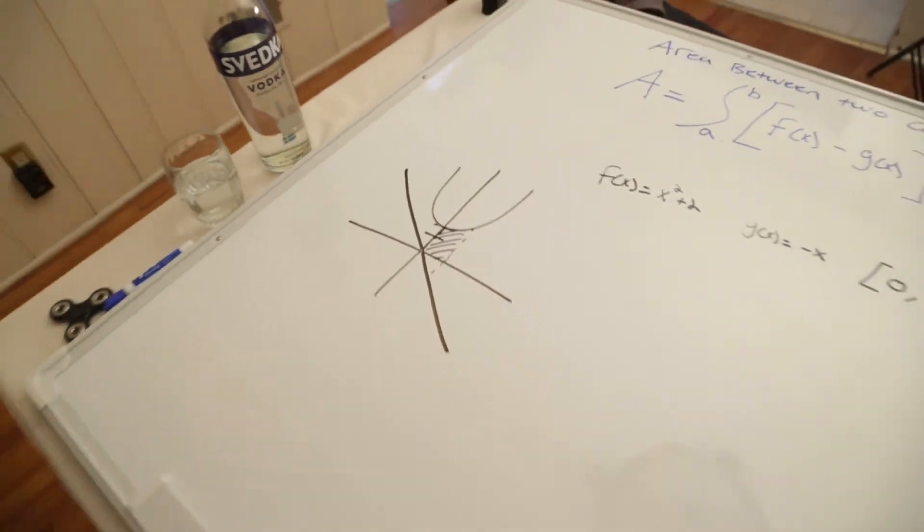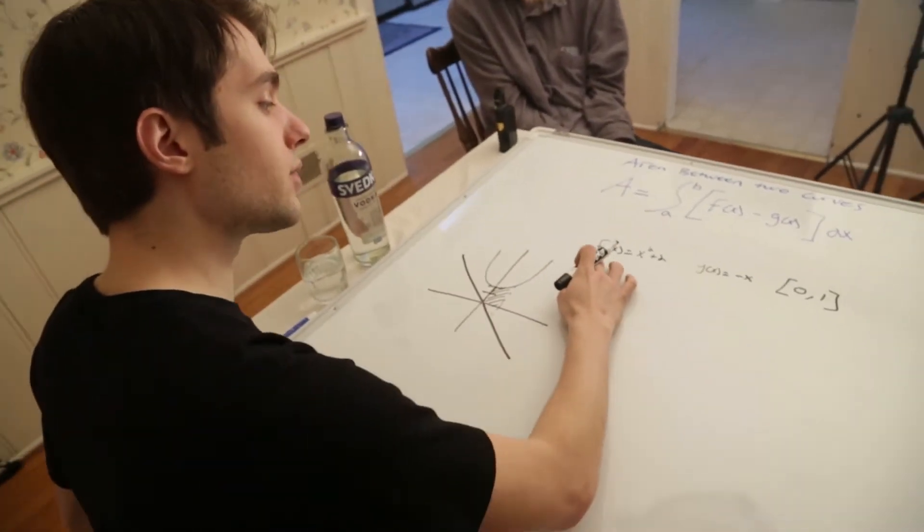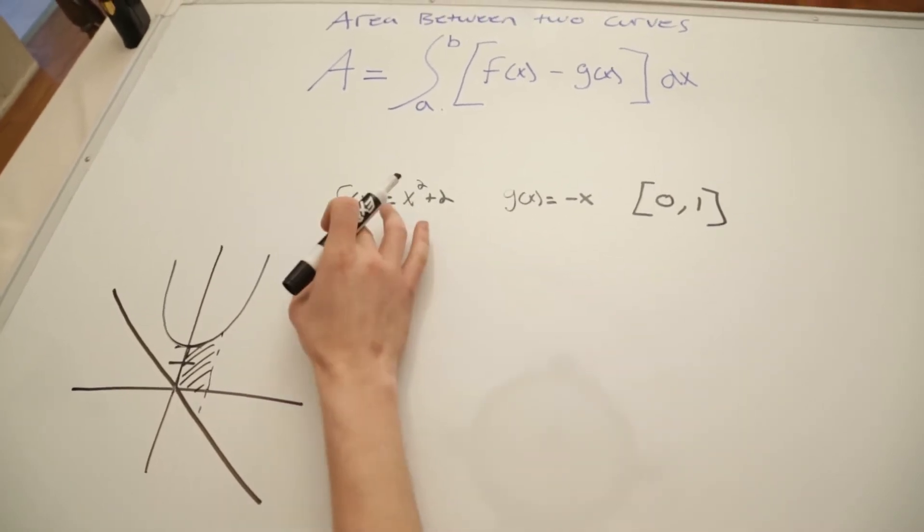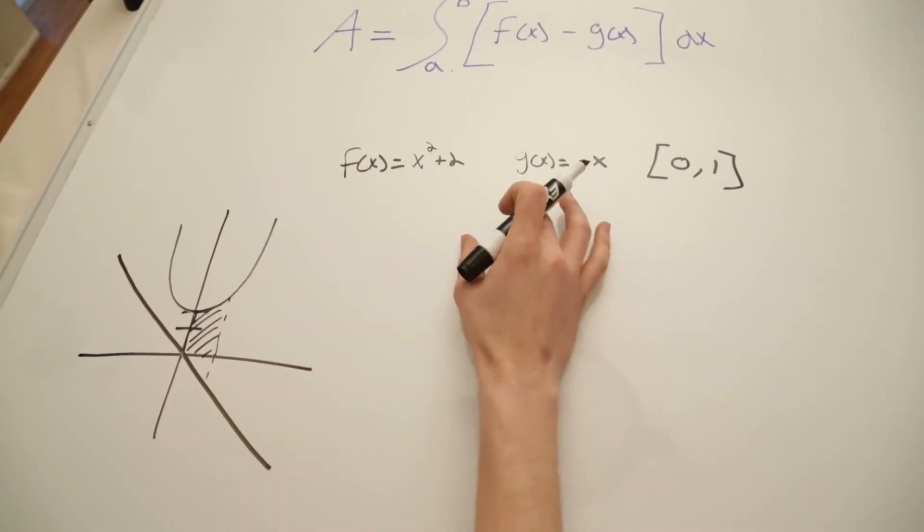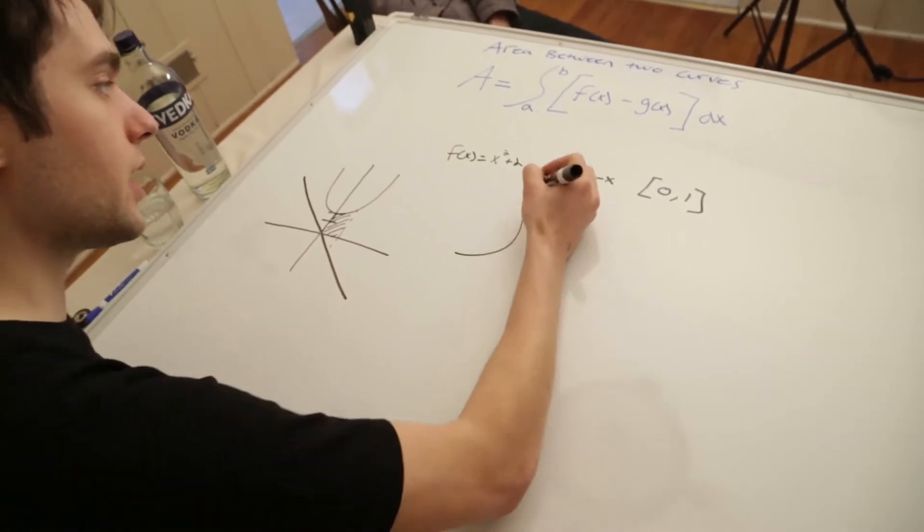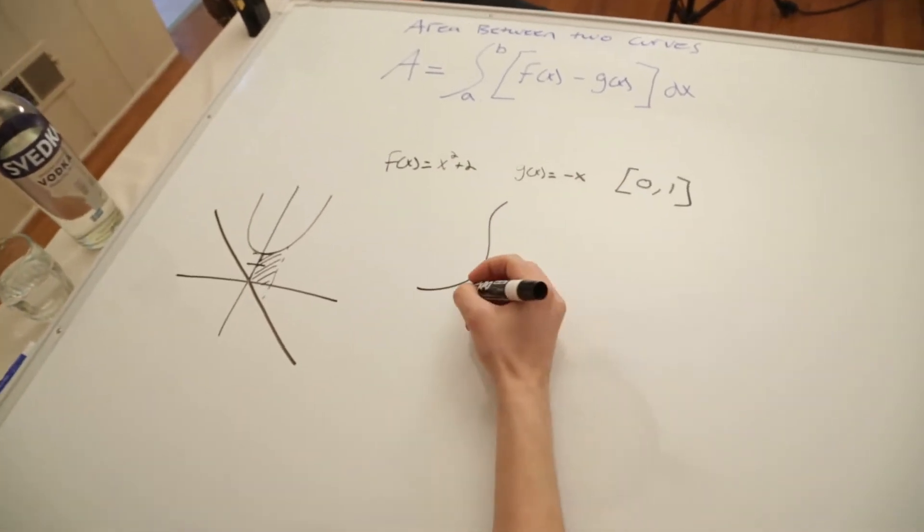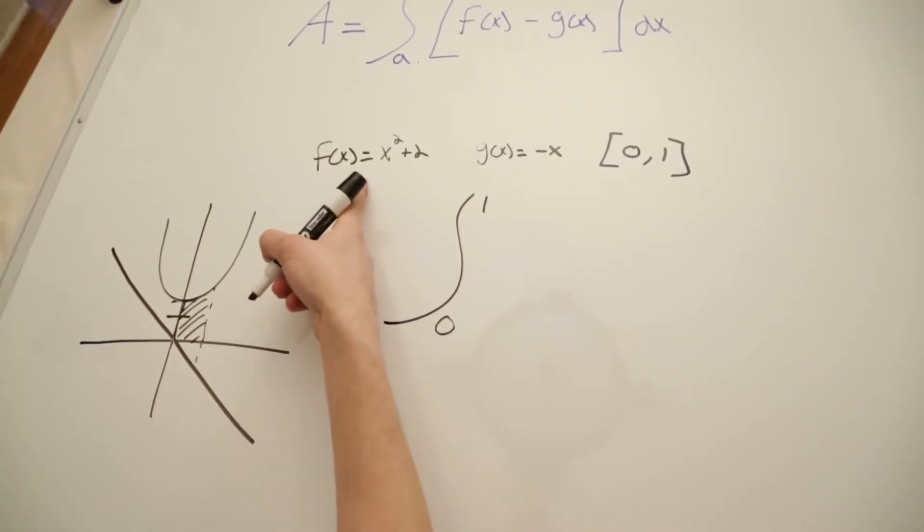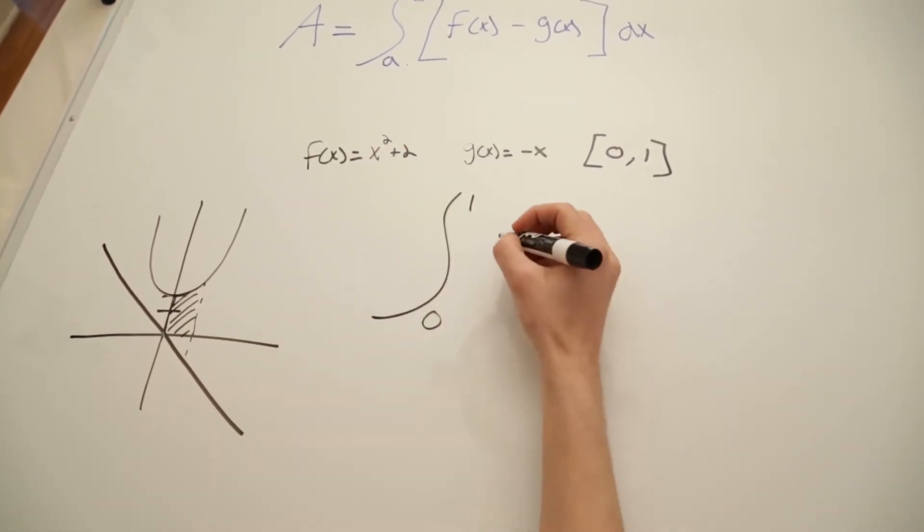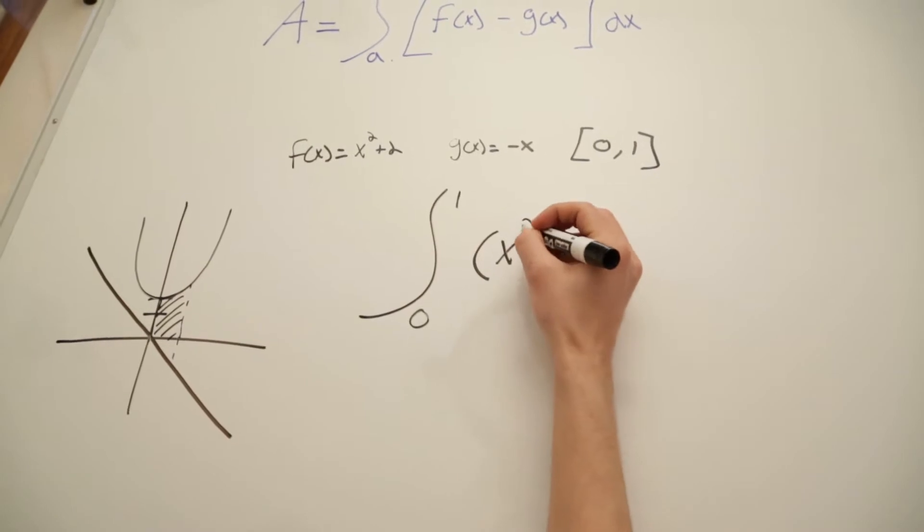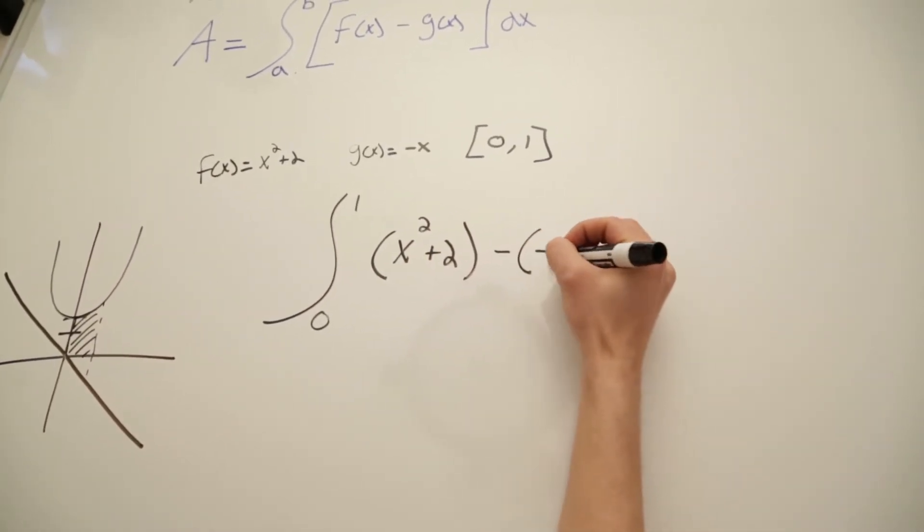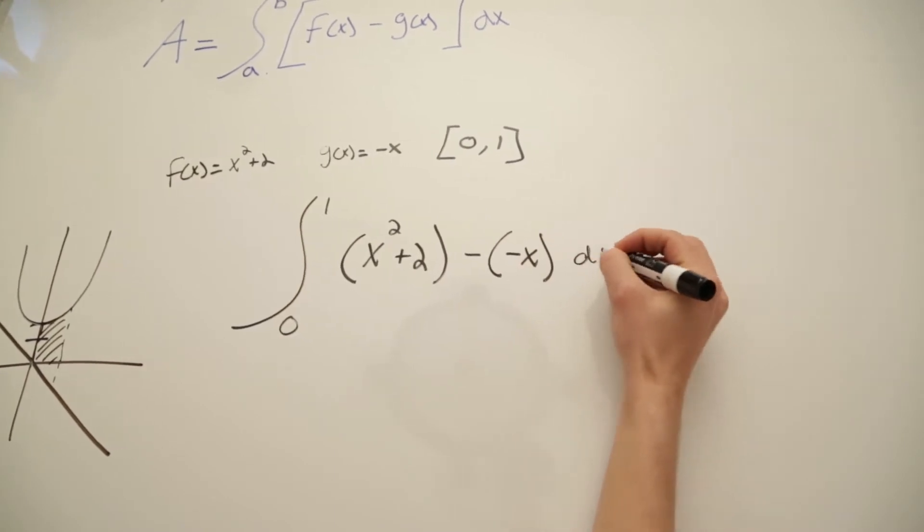Keep in mind, like I said, I know I wrote f(x) and g(x) here, but you're doing top minus bottom. So these variables here are arbitrary. Let's look at our integral. We have the integral from a to b, which is going to be zero to one. f(x), so our top curve does happen to be our f(x) here, x squared plus two. So we have x squared plus two minus negative x dx.